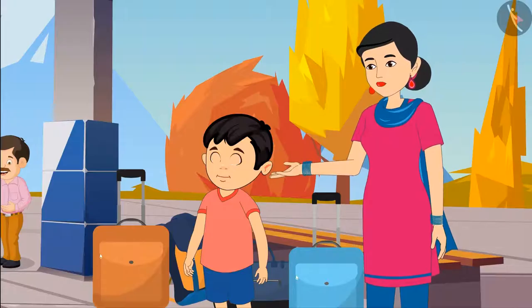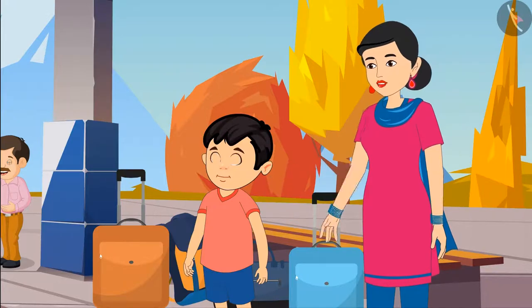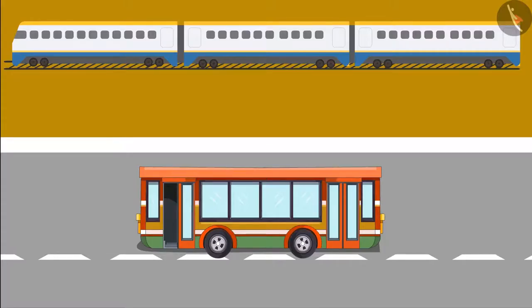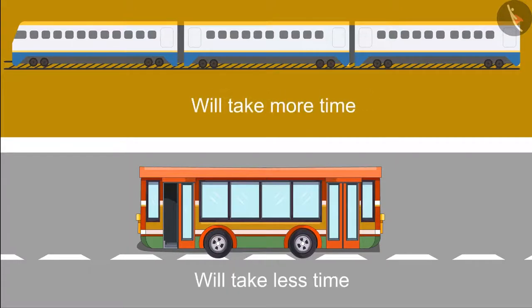His mother agrees: "Yes, Chotu, there are lots of coaches in the train." Chotu then says, "Mother, this train is longer than the bus. It means that it will take us longer to reach my grandparents' house."